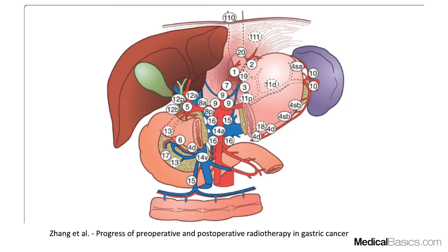Before we get started, I want to show you a quick diagram for the lymph node stations in the abdomen — both in the upper abdomen and the lower abdomen. I'm not going to go through all of these because there are so many different lymph nodes and different numbers for all the different stations. It's more important to know in general where things are and where the lymph nodes go. Everything kind of follows the vasculature, and that's the case for all the lymph nodes.